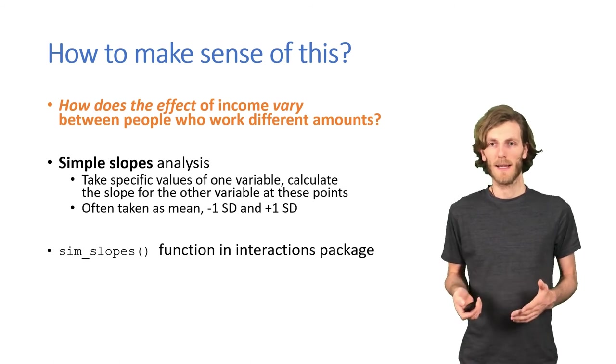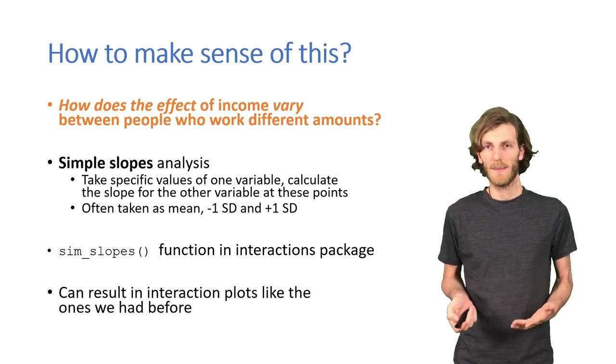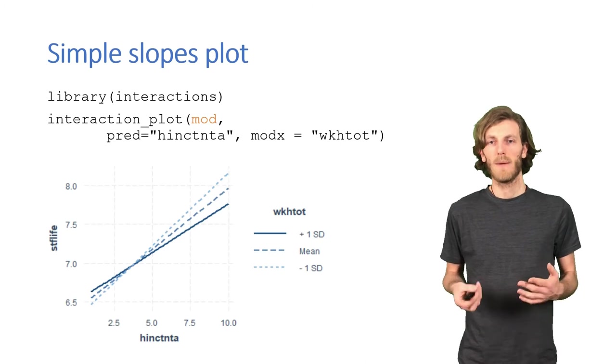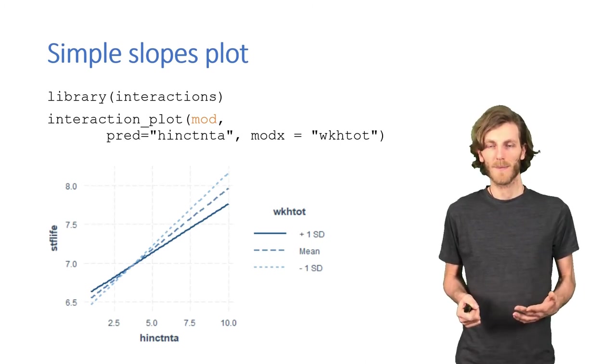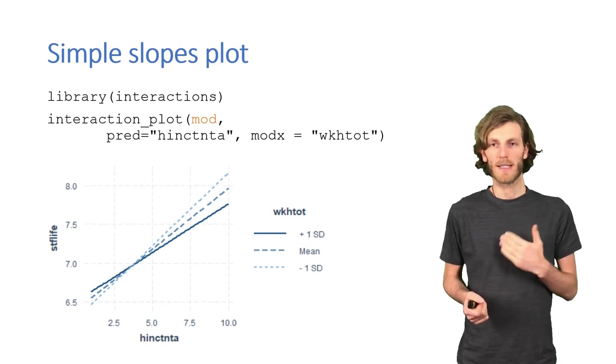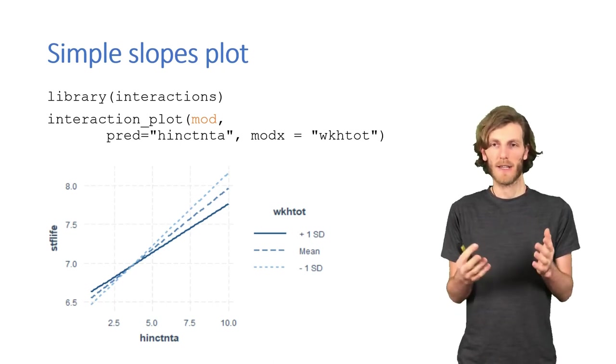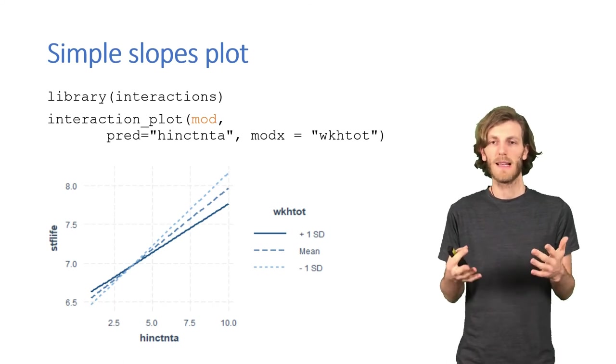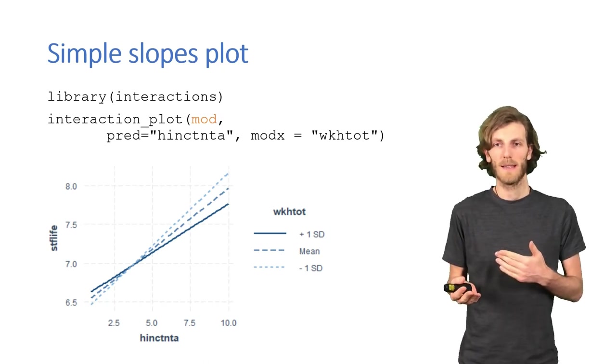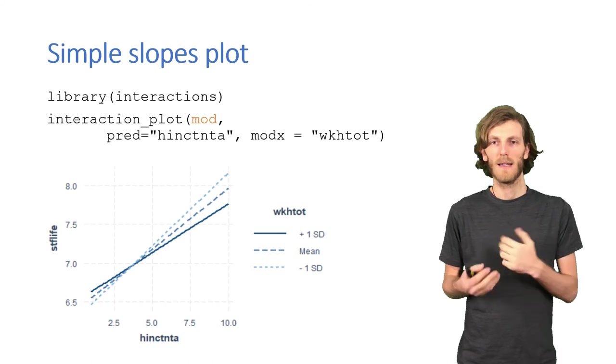The sim_slopes function in the interactions package can do that. And then when we have these slopes, it's quite natural to plot them in a way that's very similar to the interaction plots we saw earlier. So in this case, we would use the interact_plot function and we would get this plot. We now have three lines that show the relationship between income and life satisfaction at different levels of working hours. Of course, given that working hours is a continuous variable, these three lines just illustrate this space, the different slopes that there are depending on working hours. But they allow us to see that for higher incomes, actually working more is associated with lower life satisfaction than working less.